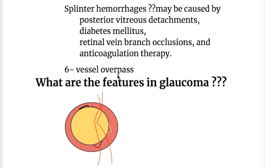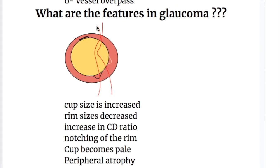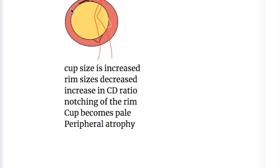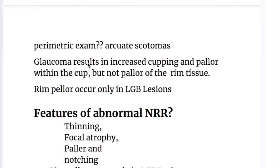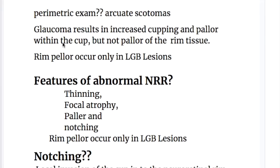Number six, there may be vessel overpass, which looks like a bridge but is not in contact with the underlying tissues. In glaucoma, the cup size is increased and the rim size is decreased. There is an increase in CD ratio and notching of the rim. The cup becomes pale and there is peripheral atrophy. Perimetric examination in glaucoma shows arcuate scotomas with a horizontal baseline. Glaucoma results in increased cupping and pallor within the cup, but no pallor of the rim tissue.